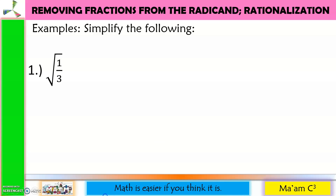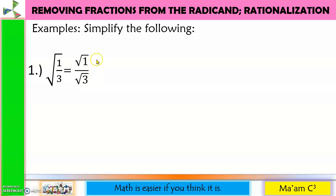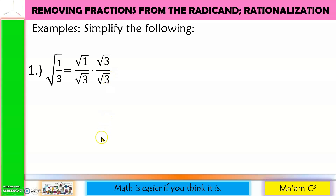Let us simplify the following. Number 1 is the square root of 1/3. First I will separate the numerator and the denominator. The index is 2 and the exponent of 3 is 1, so I need 1 more to make it 2. I'll multiply numerator and denominator by the square root of 3. Square root of 1 times square root of 3 is the square root of 3. For the denominator, 1 + 1 = 2, so it becomes the square root of 3 squared. We can cancel the square root and the exponent 2. Final answer: square root of 3 over 3.